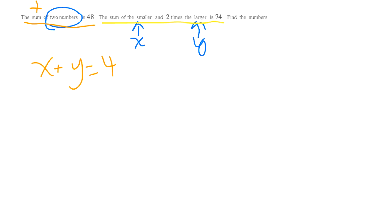And then I've got to focus on the second equation. And a sum again means plus. So the sum of the smaller and two times the larger is 74. So there's my two equations and I can solve those.